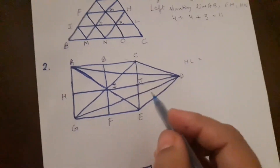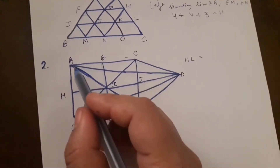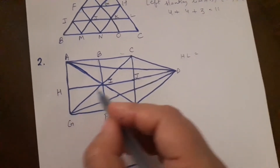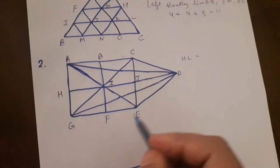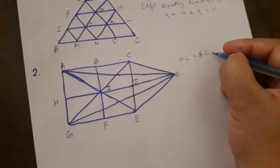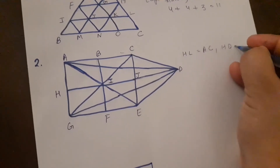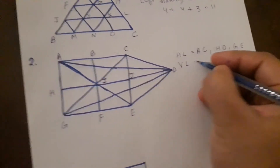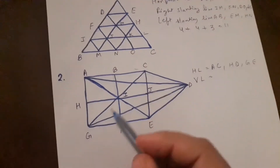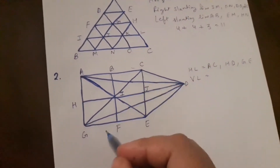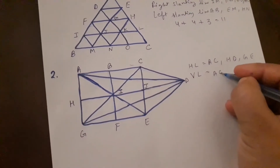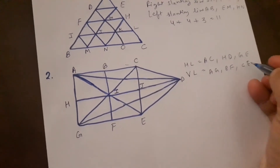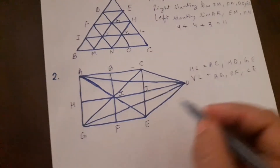Now you can see the horizontal lines in this figure. They are A C, H D, and G E. There are three horizontal lines. After that we will look for vertical lines — vertical lines are there in this figure. Three vertical lines are there. They are A G, B F, and C E. The vertical lines are also three in number.